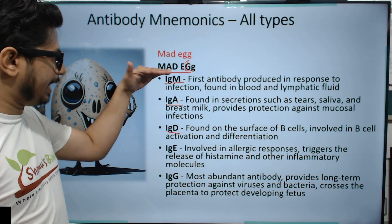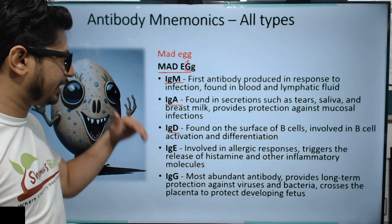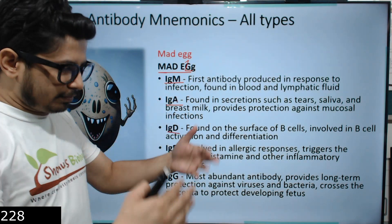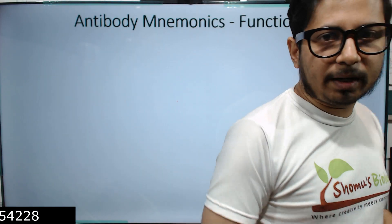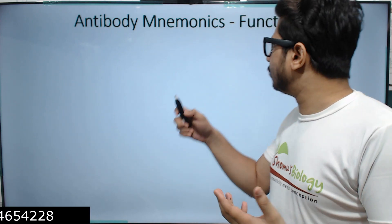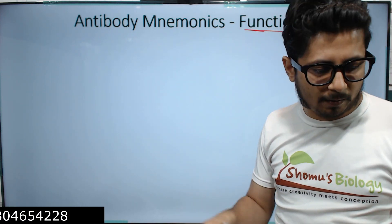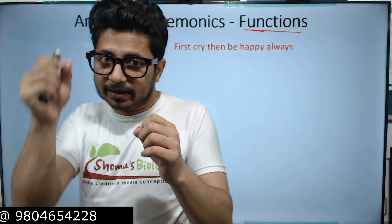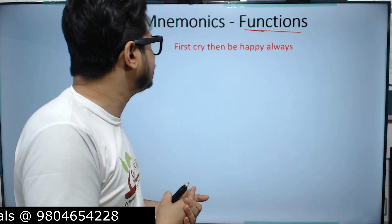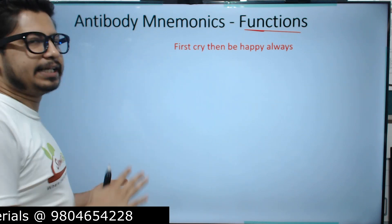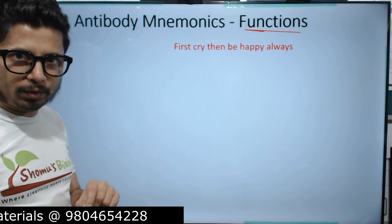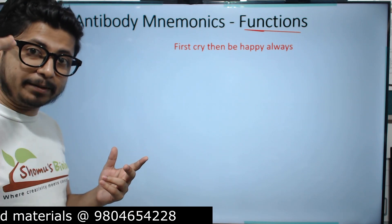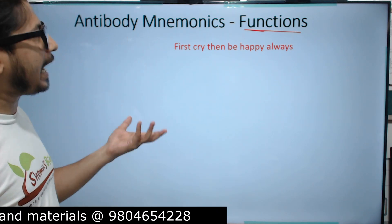So 'MAD EGG' helps you understand IgM, A, D, E, G quite easily. Now let's move on to the functions of all these antibodies. Remember the MAD EGG order, and this sentence will guide you to understand the functions of all these antibodies in that order: 'First cry then be happy always.'